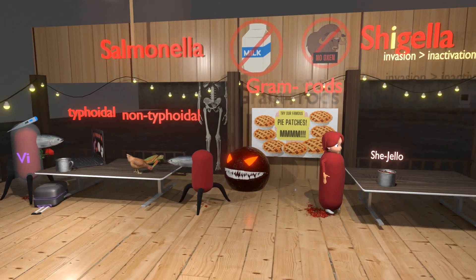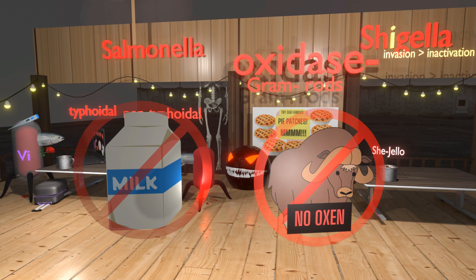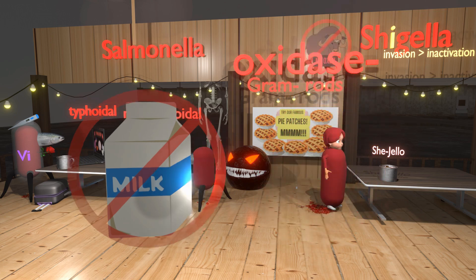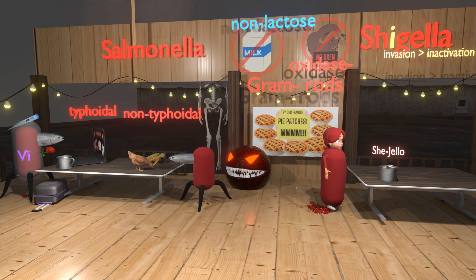There are two signs on the wall of the restaurant. One says no oxen — apparently oxen break in — which reminds us that Shigella and Salmonella, as opposed to other gram-negative pathogens, are oxidase negative. The other sign says no dairy, no milk, which reminds us that Shigella and Salmonella are both non-lactose fermenting pathogens, differentiating them from other gram-negative pathogens that do ferment lactose.